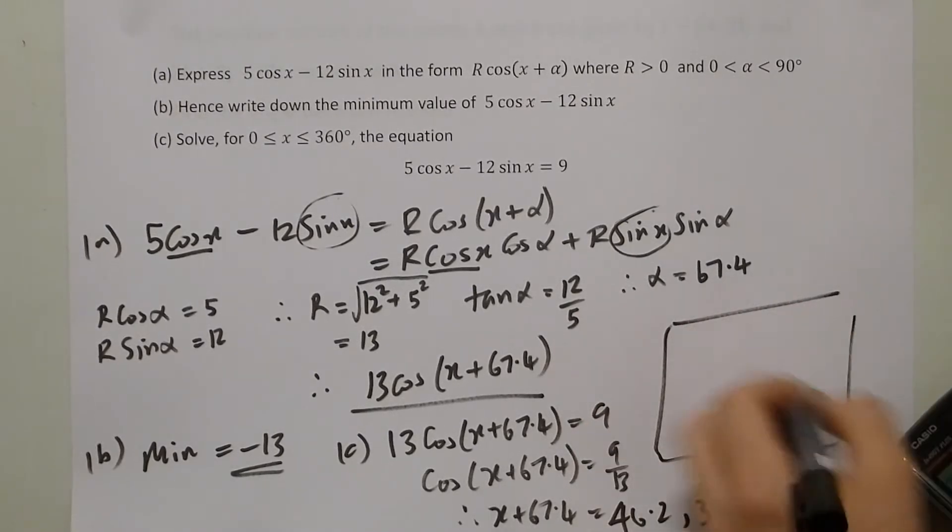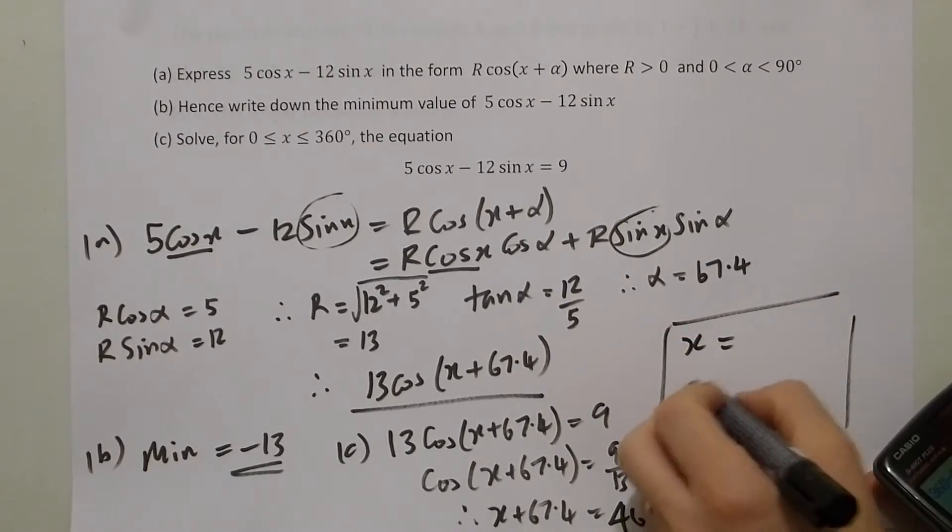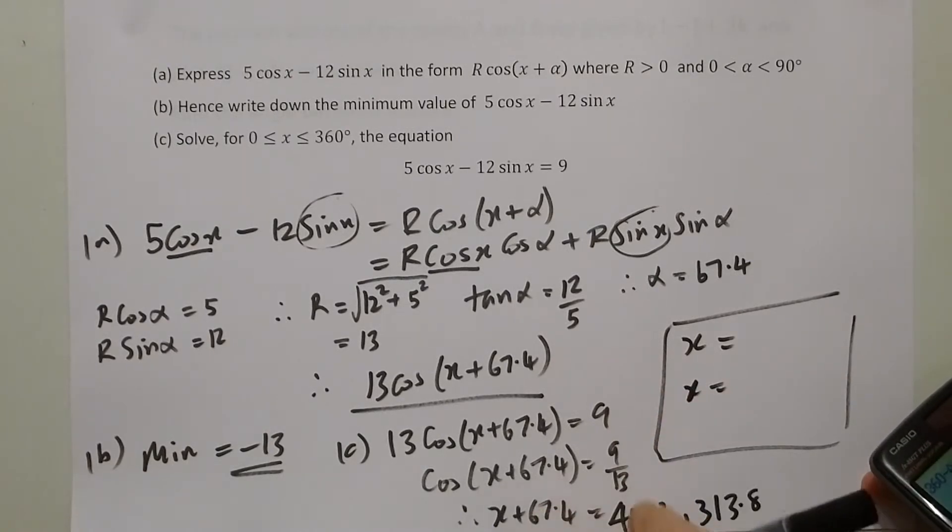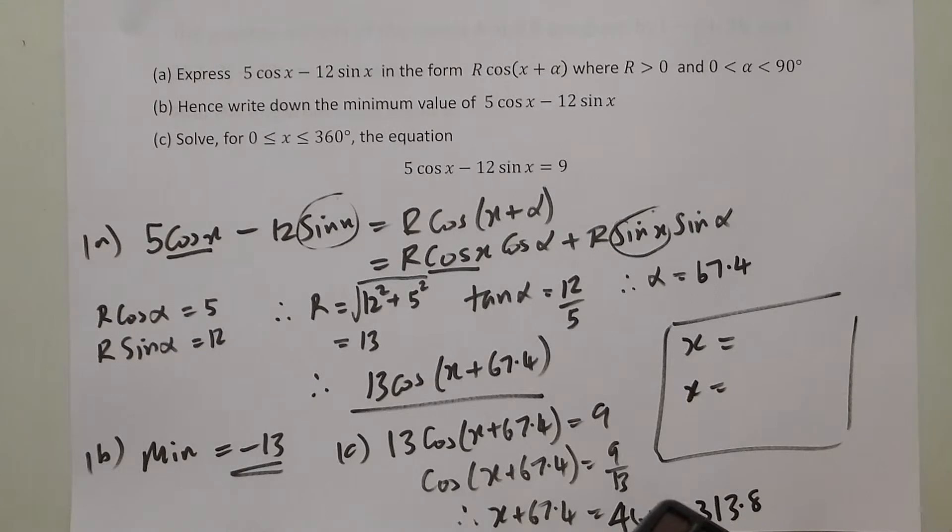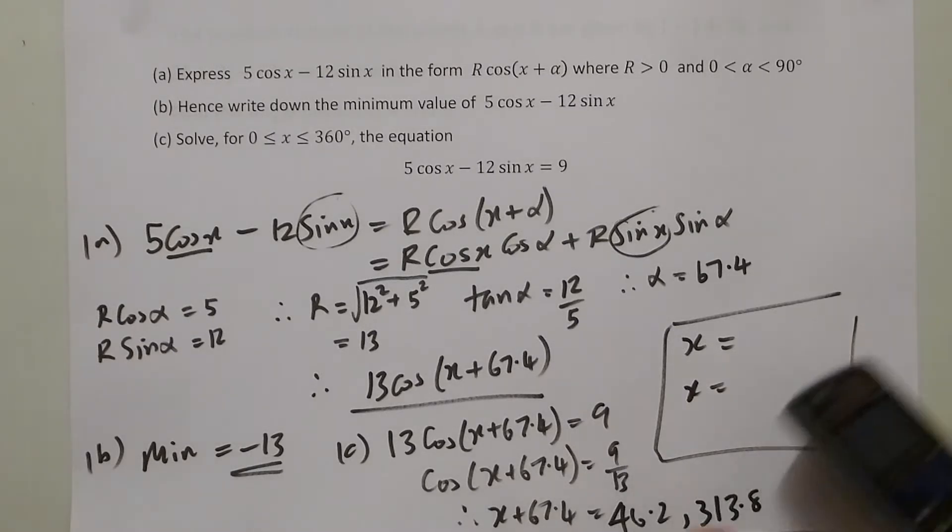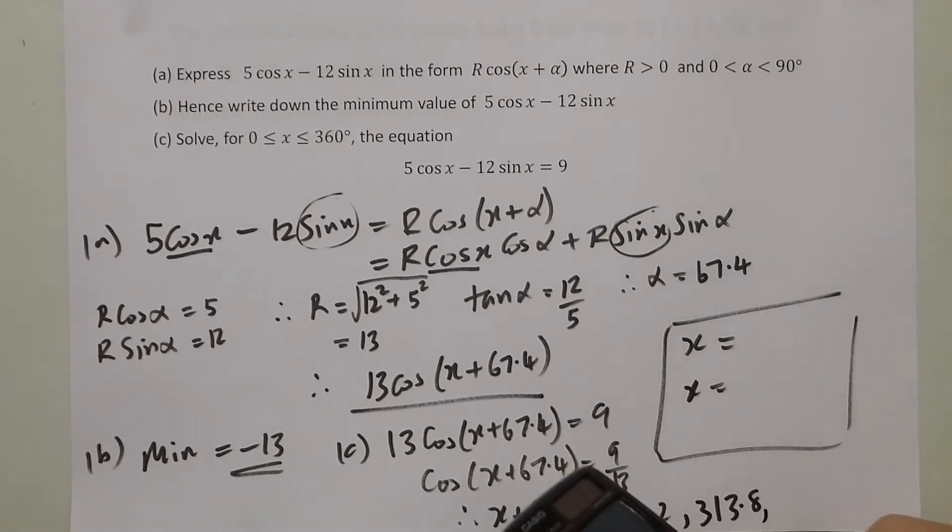And therefore, x can equal 2 answers if I subtract from the 360. The first one there is not allowed, which means that I need to come up with another one. So if I deal with this one first, take 67.4, gives 246.4.